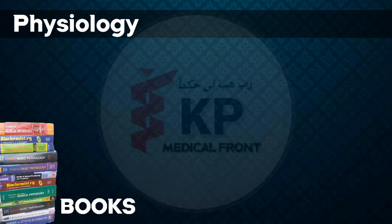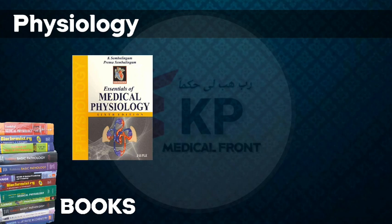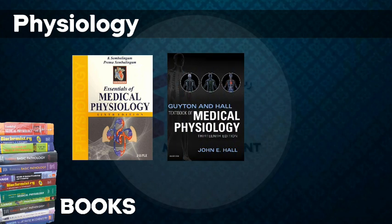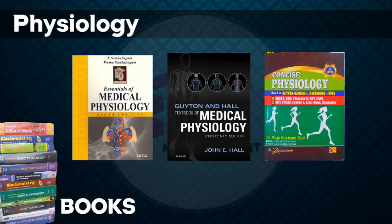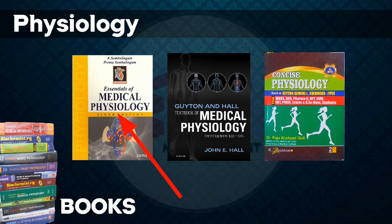The three physiology books are: Physiology by Sembulingam, Physiology by Guyton and Hall, and Physiology by Raja Shahzad, also called Concise Physiology. Guyton and Hall is the most complex and detailed book — for detailed and self-study you should use it. Physiology by Sembulingam is somehow similar, so Guyton and Hall is preferred.